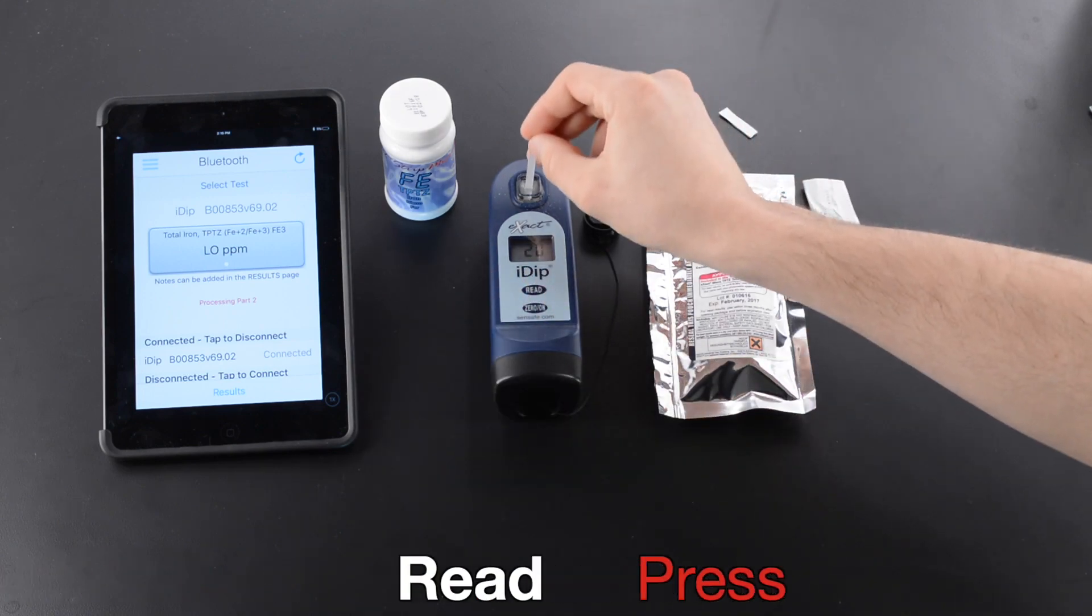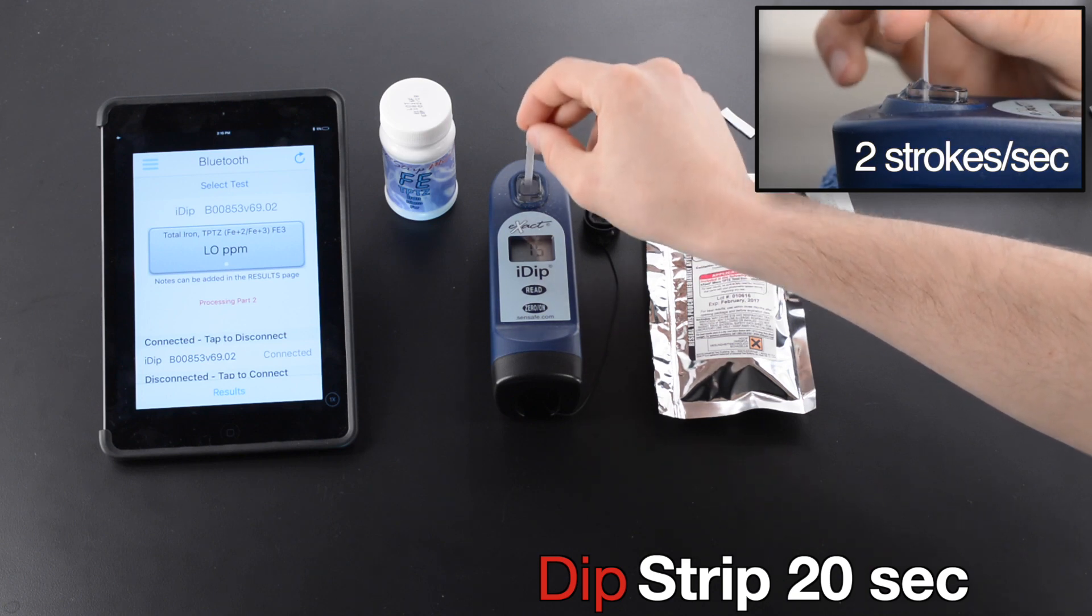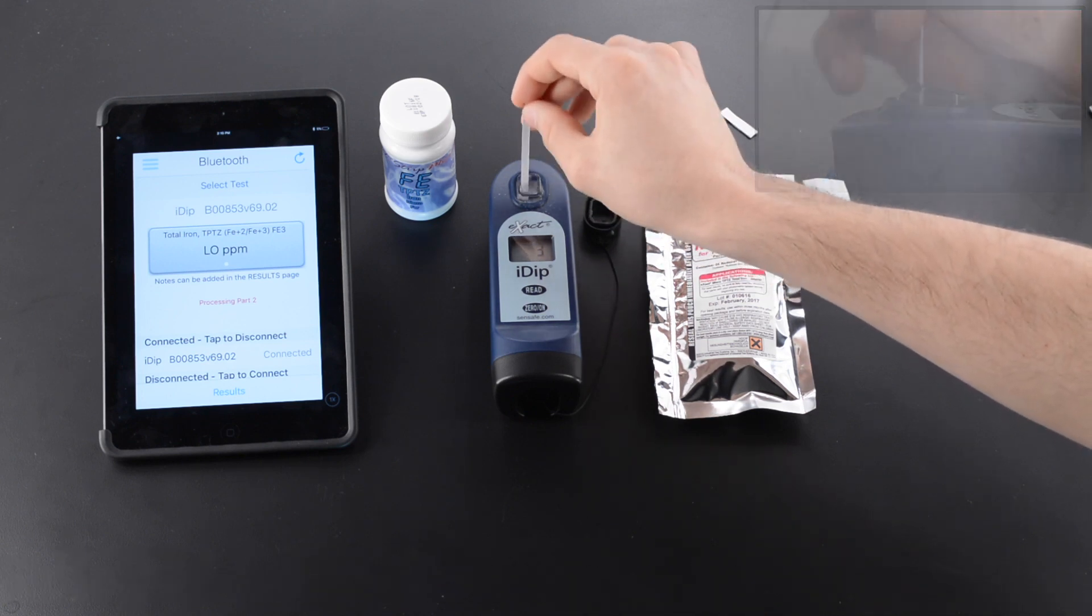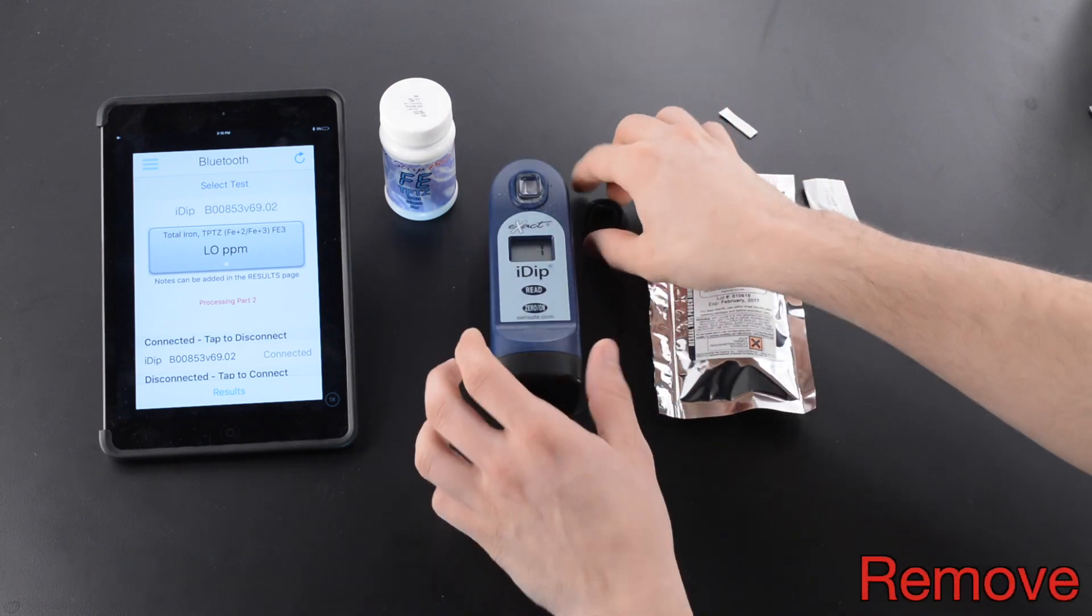Press Read. Dip Strip 20 seconds. Two Strokes Per Second. Remove Strip at one second. Replace Cap.